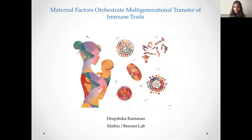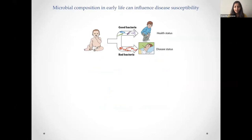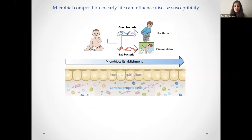As soon as we are born, we are colonized with thousands of microbes, most of which we get from our mothers. This collection of microbes that live on and in us is called our microbiota. The composition of our microbiota in early life seems to influence susceptibility to diseases when we're adults, particularly in intestinal diseases such as Crohn's disease and ulcerative colitis, due to a breakdown in tolerance of the intestinal immune system to the microbes present in the intestine.